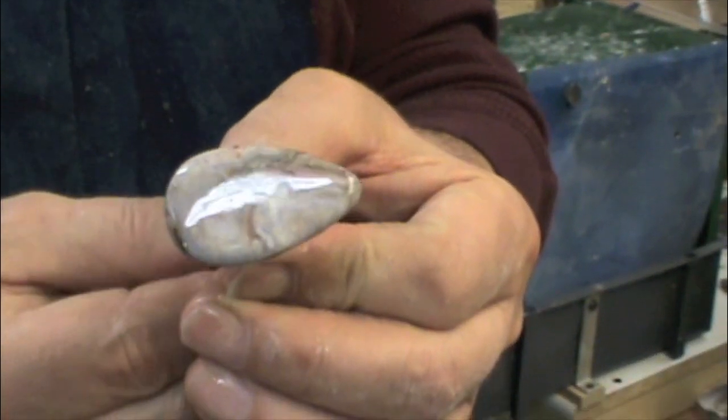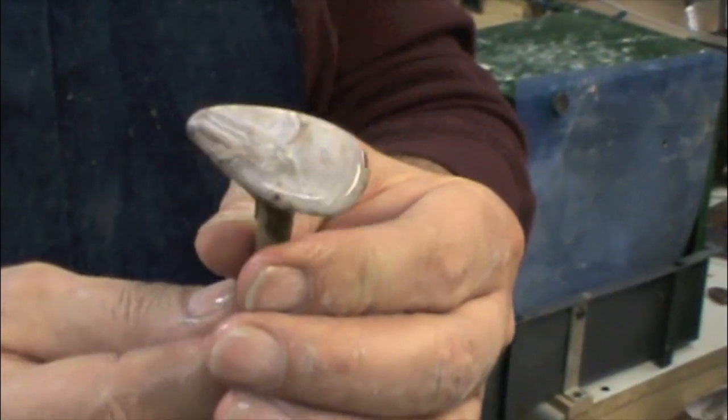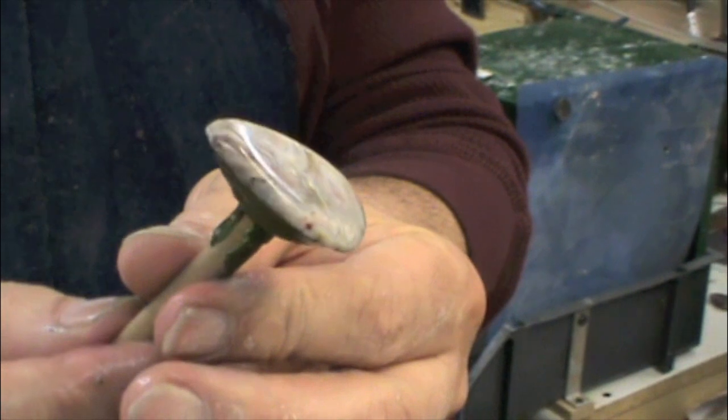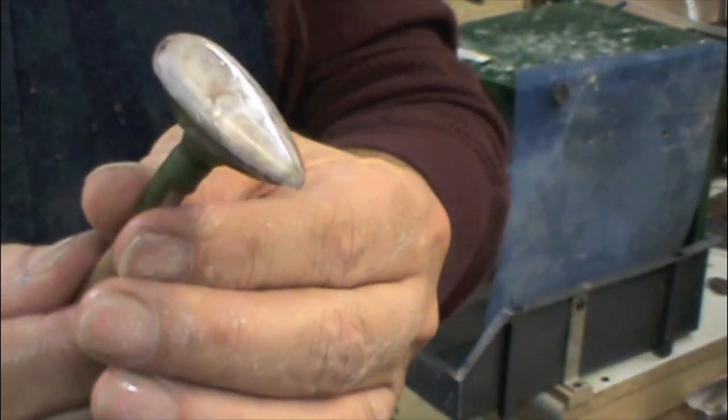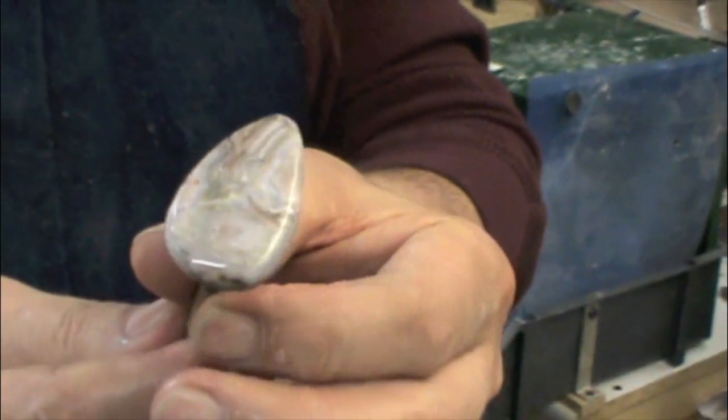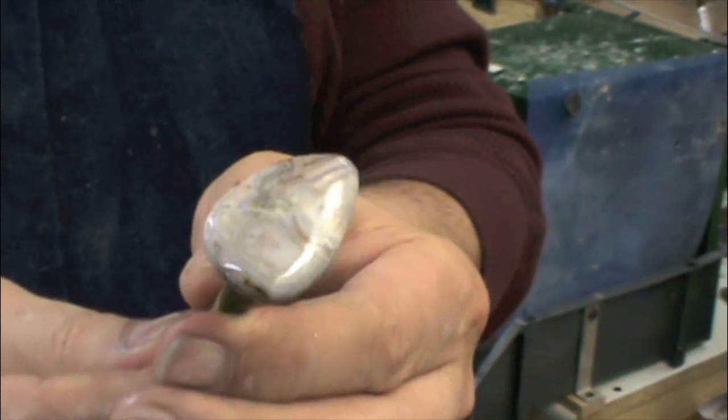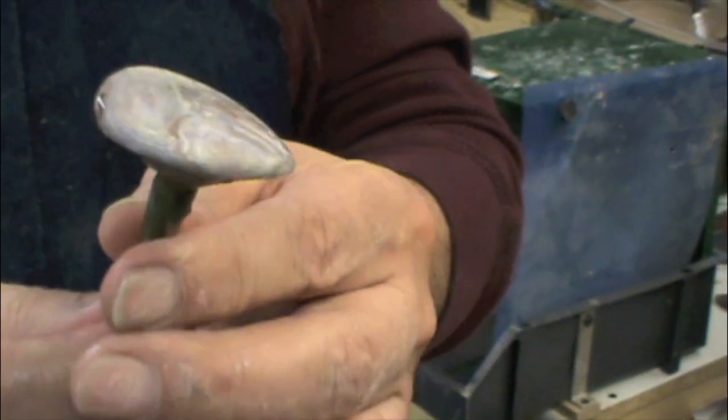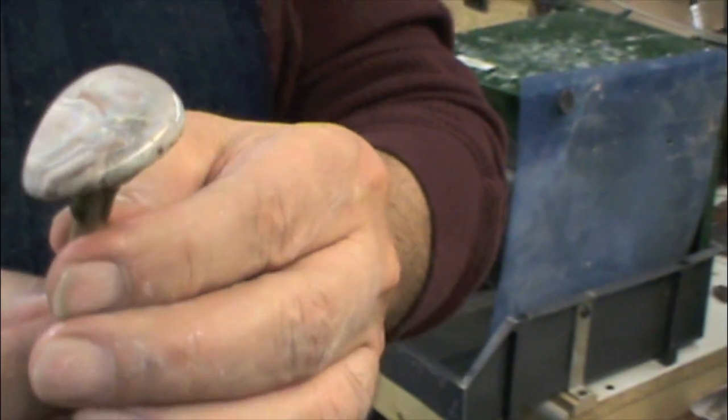Now this is only 600. So we did the 220, which we shaped the stone, and now we're using the 600 just to eliminate the marks or the grinding marks from the 220 grit.